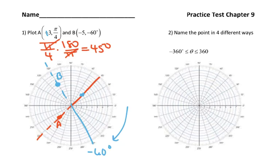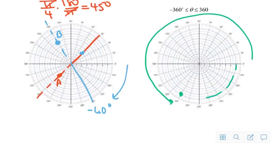Number two, name the point in four different ways. And there's no point there, so I will give you a point. Let's figure out where that green splotch is. One way of doing this is to use the scaling on this graph here. And it looks like it's at 240 degrees. And it's on the circle labeled 7. So 7, 240 degrees is one way of labeling this.